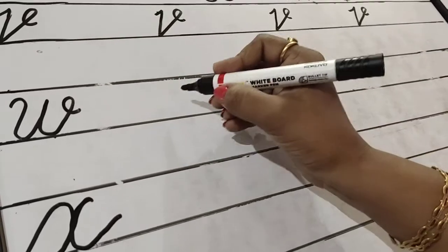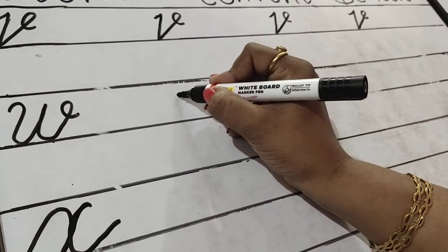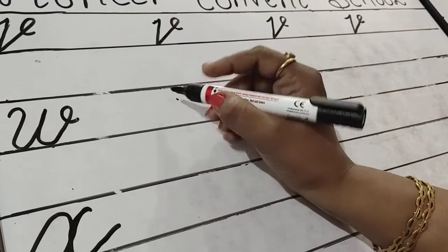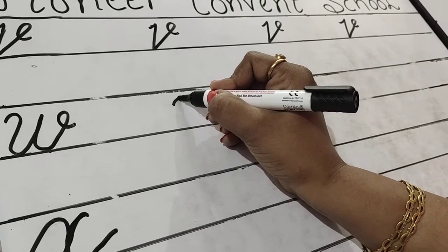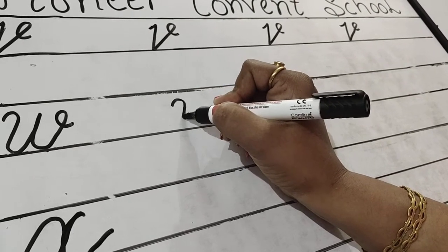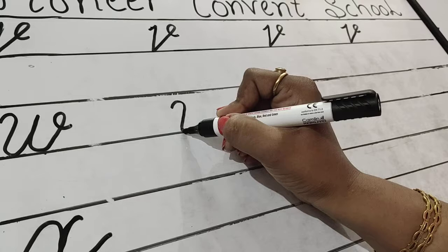This is small V. Now how to make W. We have learned how to make V. Under, we go up on the tail.